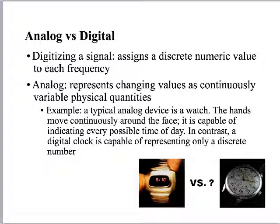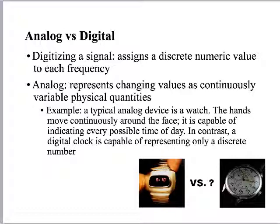Let's talk about what we mean by 'digital.' Think about a digital watch — the promise of digital was that it could parcel time out in discrete packages. Every minute is a minute — nothing more, nothing less. That's what digital does. It's either on or it's off, versus analog, which continuously changes.